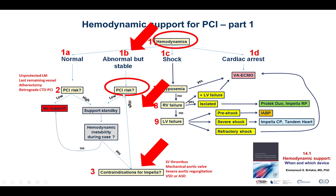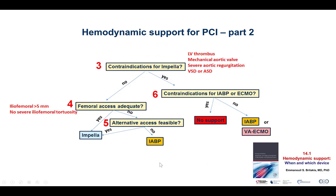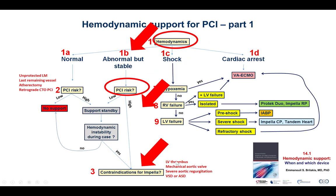The PCI planned for him was high risk, given the LAD CTO and the intraluminal filling defect in the right coronary artery, so this is a case in which hemodynamic support can be considered. For cases like this, the preferred device is the Impella, unless there is a contraindication such as left ventricular thrombus, mechanical aortic valve, severe aortic regurgitation, or VSD or ASD. This is discussed in detail in video 14.1.